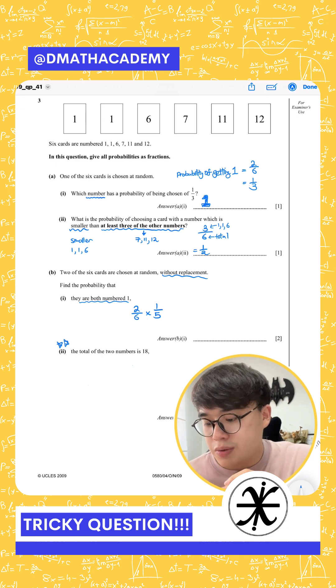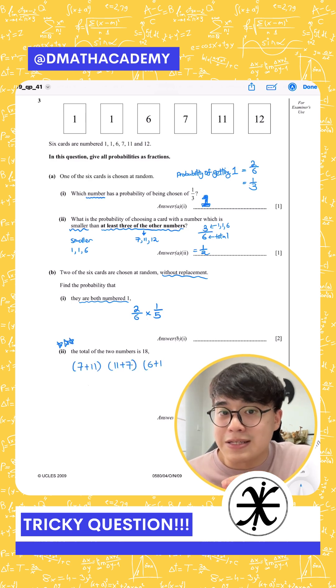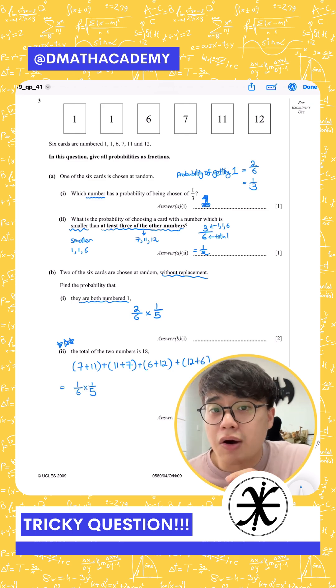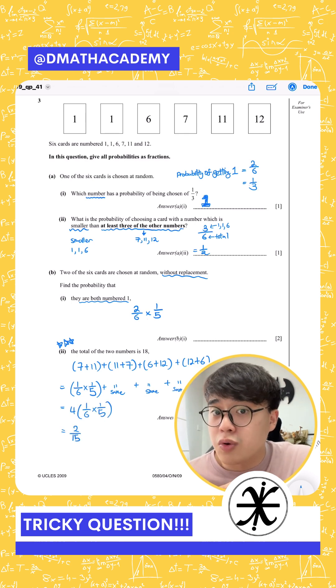So for question number 2, they were asking you about total number is 18, but they didn't specify what number to draw first. So you have to list down all the possibilities like what I did here. When you add all of them up, you will get 2 over 15. So please take note, this is regarding the concept that arrangement matters.